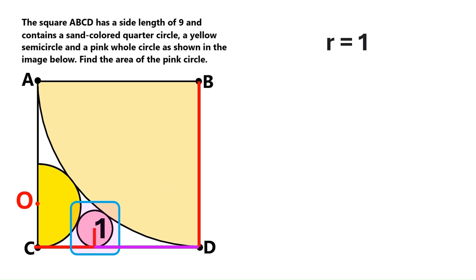Now my son will help us find the pink circle's area. Go ahead, son. The area of a circle equals pi times R squared. We know that R is 1. So the area is pi times 1 squared. And 1 squared is 1. So the area of the pink circle is just pi.